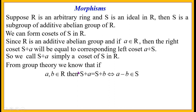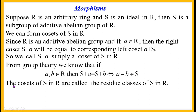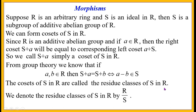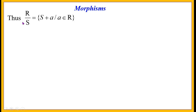From group theory, we know that if A, B belong to R, then S plus A equals S plus B implies, and is implied by, A minus B belongs to S. The cosets of S in R are called the residue classes of S in R. We denote the residue classes of S in R by R divided by S. Thus R/S is equal to the set of all cosets of the form S plus A where A belongs to R.